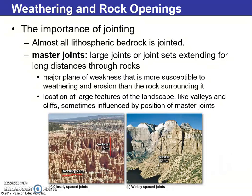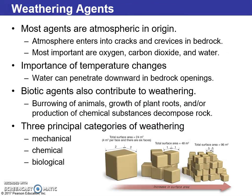Here we see examples of master joints. Lithospheric bedrock is almost all joints. We see vertical joints, bedding joints, and widely spaced joints — essentially where the rock folds together. So we talked about atmospheric and lithospheric processes.